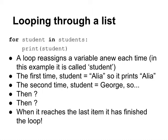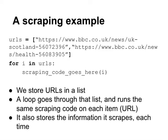In the slides accompanying this video, you'll see recaps of these key points. The word between 'for' and 'in' is a name that we create to store each item in the list as we loop through it. To give you an example of how this works in scraping: your list might be a list of URLs — obviously longer than shown here — stored in the same way. You'd then loop through that list of URLs and do something with each one in turn. In this case I've just used 'scraping code goes here' to represent that we would have some code inside the loop dealing with the particular URL it's up to in the list. It's also quite common to use 'i' as the name for each item in the list, and that 'i' is then used in the code.